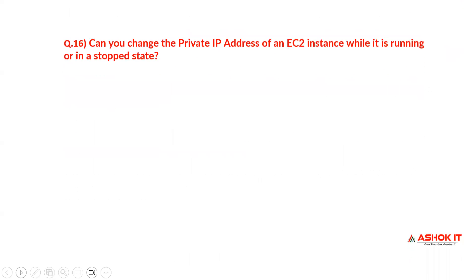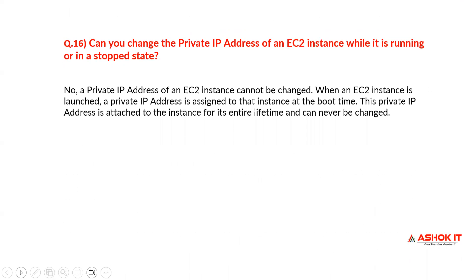Can you change the private IP address of an EC2 instance while it is running or in a stopped state? No, the private IP address of an EC2 instance cannot be changed. When an EC2 instance is launched, a private IP address is assigned to that instance at boot time. This private IP address is attached to the instance for its entire lifetime and can never be changed.